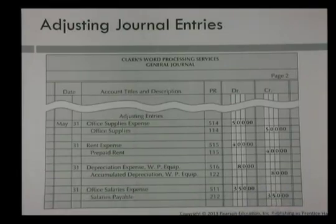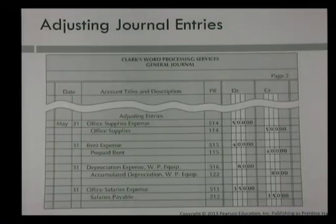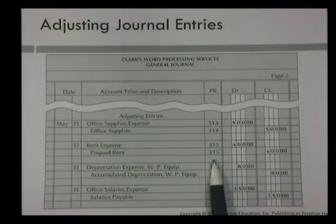Once you have done these journal entries in the general journal, you will now post to the general ledger. Once you have posted and those account balances are up to date, now you have the true amounts in the general ledger.